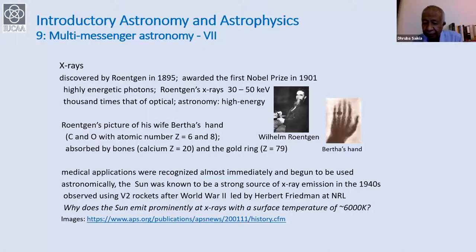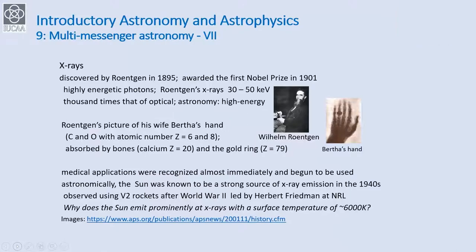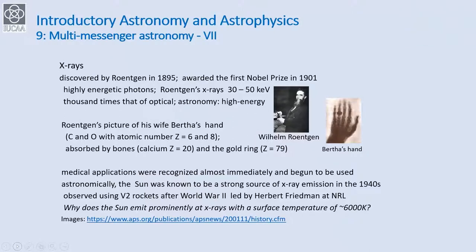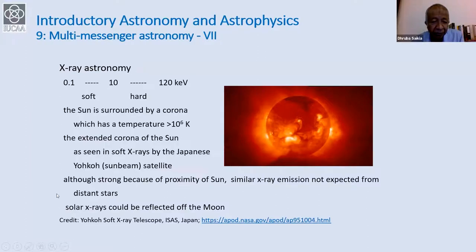A student suggests: maybe the corona of the sun. Excellent — the corona emits at X-ray wavelengths because X-rays are at high energy, so you need gas at higher temperatures to emit X-rays. The corona of the sun is hotter than the surface. The student guesses 9,000 to 10,000 Kelvin for the corona temperature, but the temperature is way above that — the corona is over a million degrees Kelvin. An understanding of how the corona gets heated to such high temperatures is still a matter of research.